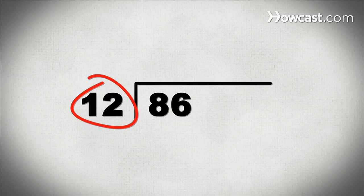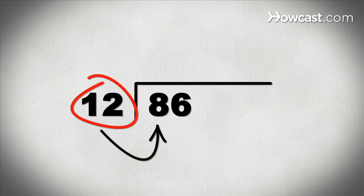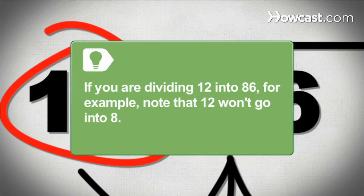Step 2. Decide whether the divisor is small enough to divide the first digit in the box, the farthest to the left. If you are dividing 12 into 86, for example, note that 12 won't go into 8.